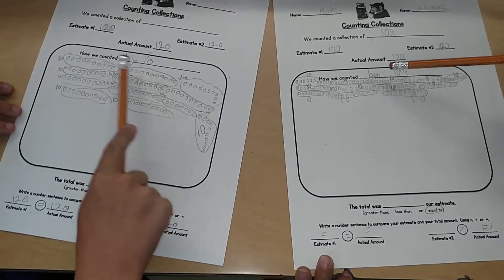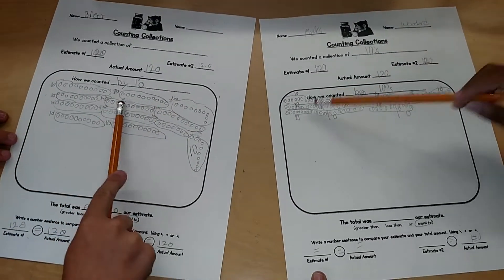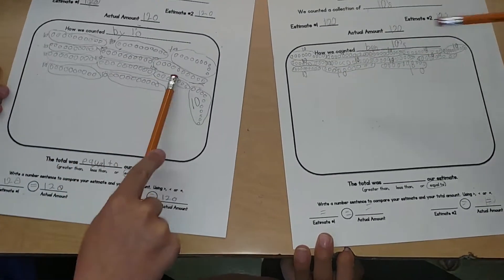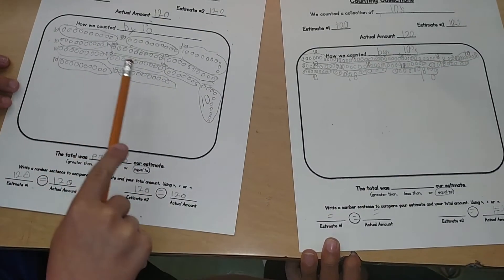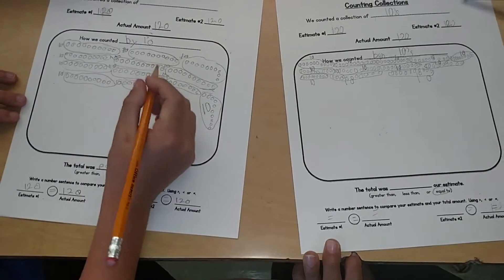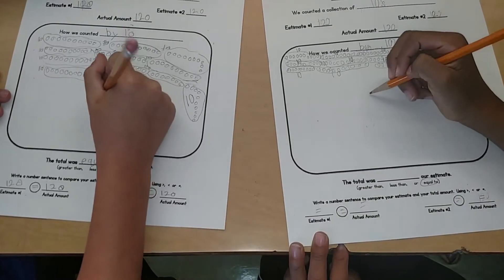Count your groups. 1, 2, 3, 4, 5, 6, 7, 8, 9, 10, 11, 12. Yes? Okay, then write the number 12 on your paper inside the box is fine.